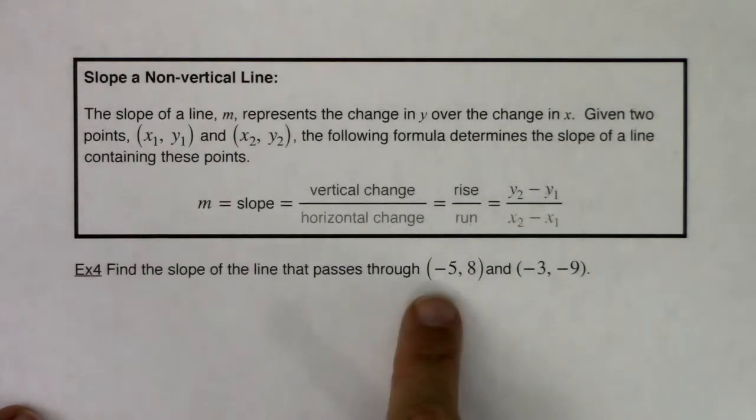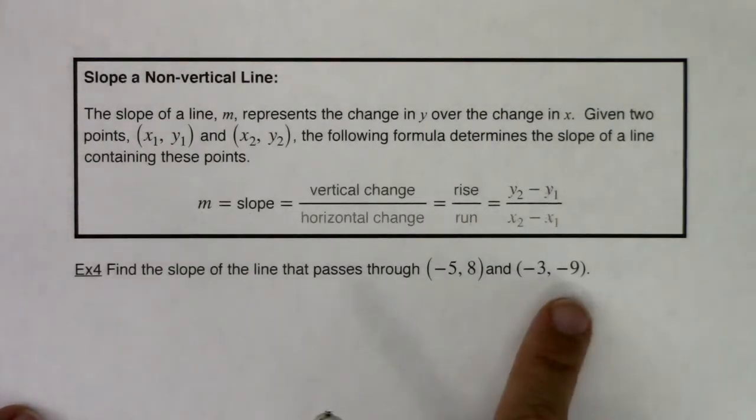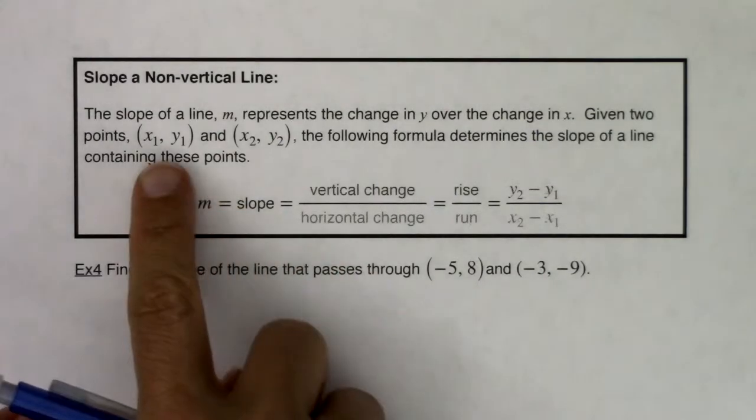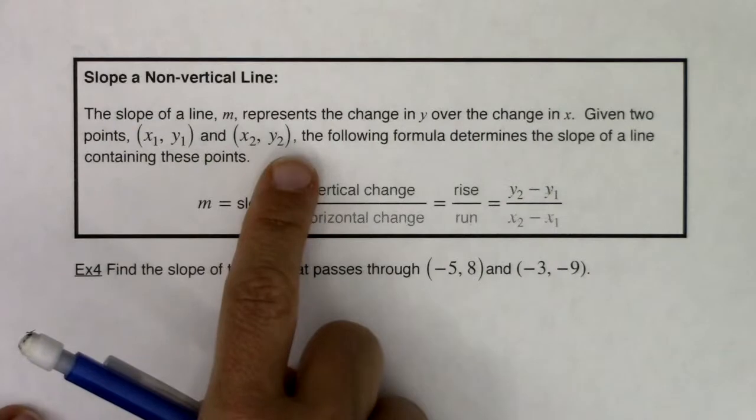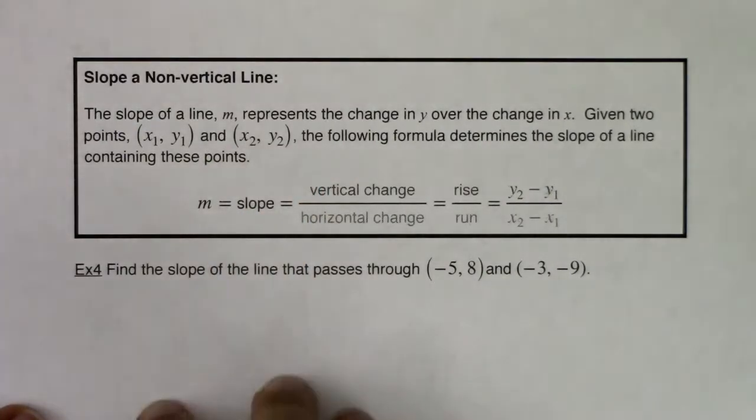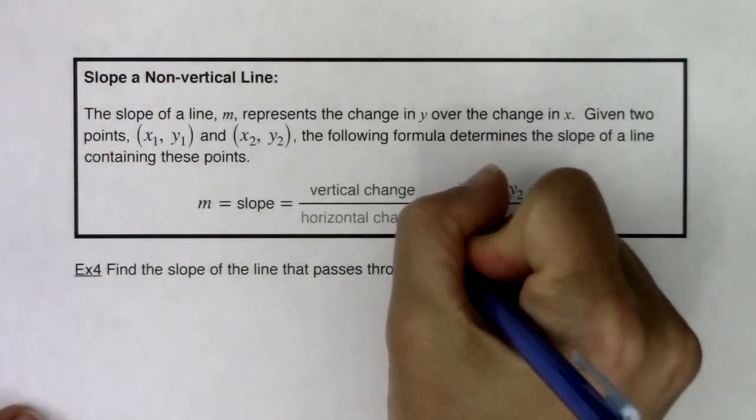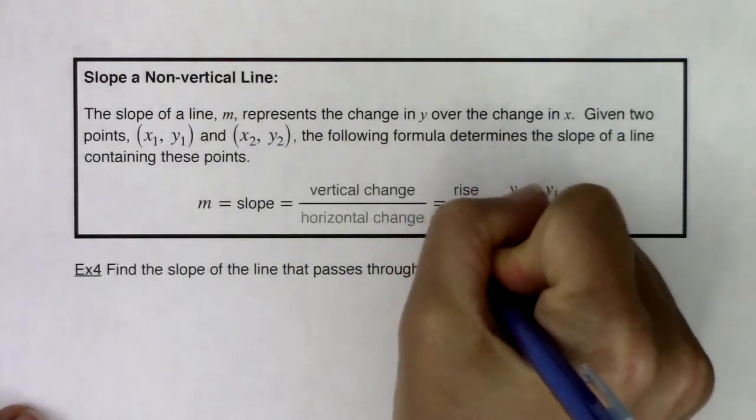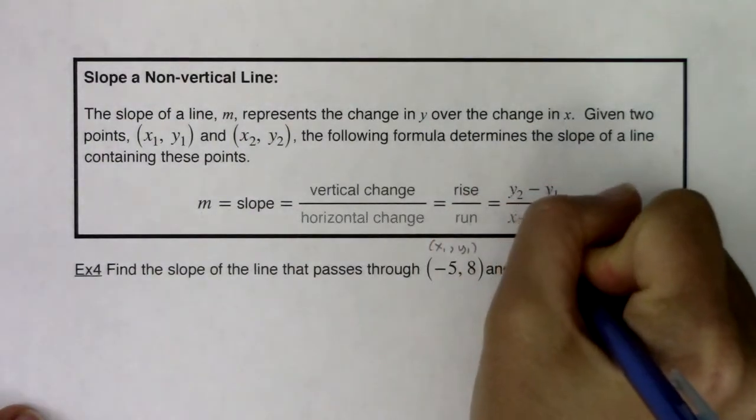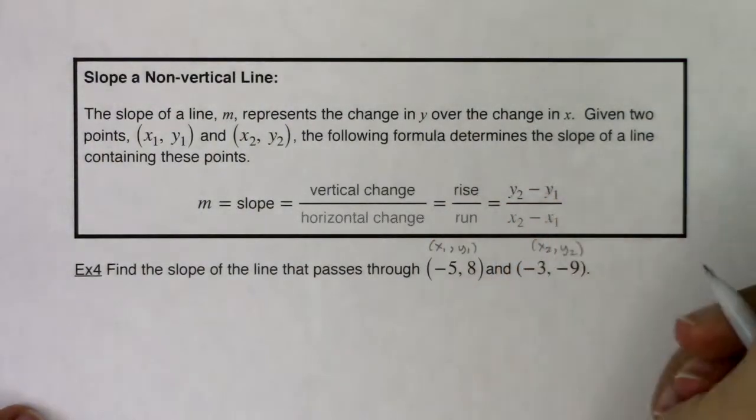So here we go. Find the slope of the line that passes through (-5, 8) and (-3, -9). Now, I don't care which one you call x1, y1, and x2, y2. I'm actually going to show you this both directions just so you can see that we get the same answer either way. But for right now, let's call this point our first one, and this one our second one, only because that was how they were listed.